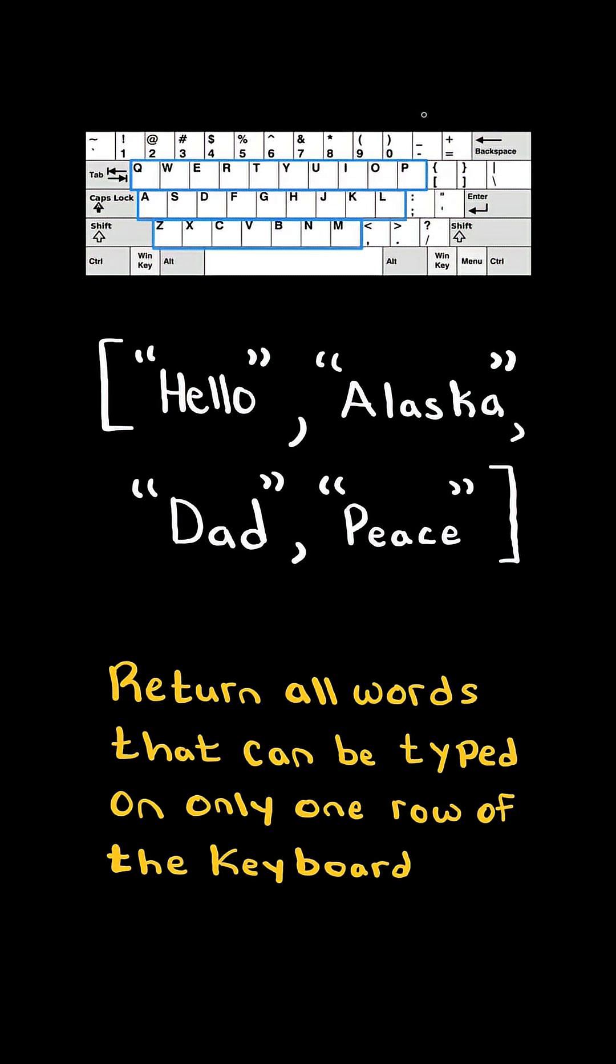Notice there are only three rows on this keyboard with alphabetical characters. Consider the first word. The characters of the word hello span multiple rows of the keyboard, so we do not include it in our list.